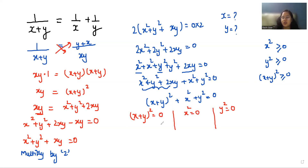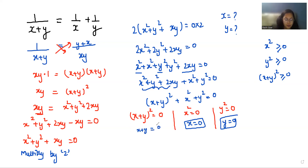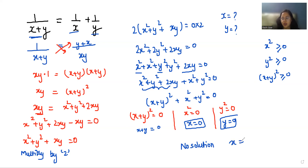From x² = 0, we get x = 0, and similarly y = 0, and x+y = 0. But in the original equation, x, y, and x+y appear in the denominators, and a denominator cannot be 0. Therefore, this equation has no solution — x cannot be 0 and y cannot be 0.